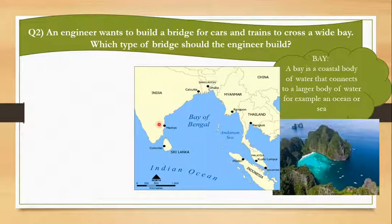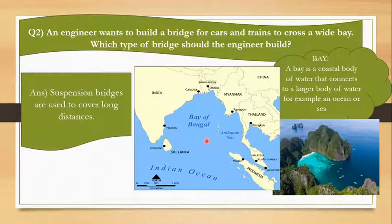You can see it's so huge because the Bay of Bengal is the bay of the Indian Ocean. If you have to make, for example, from Madras to Kuala Lumpur, if you had to make a bridge, how? Because it's a wide bay. What kind of bridge do we have to build? The answer is very simple: suspension bridges are used to cover long distances.